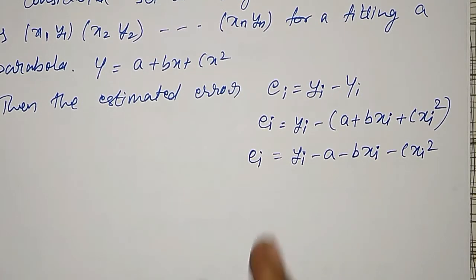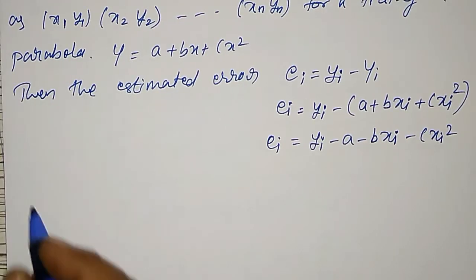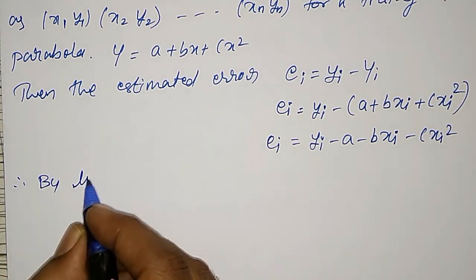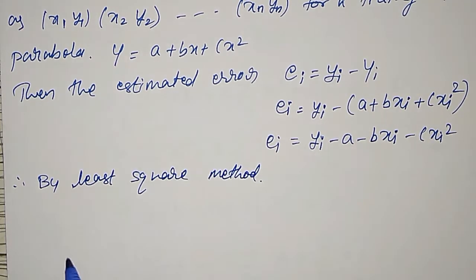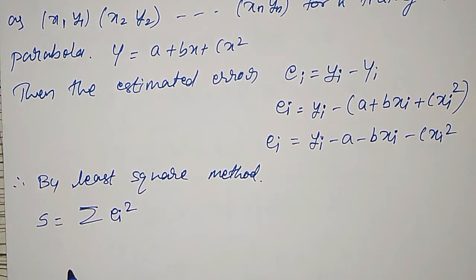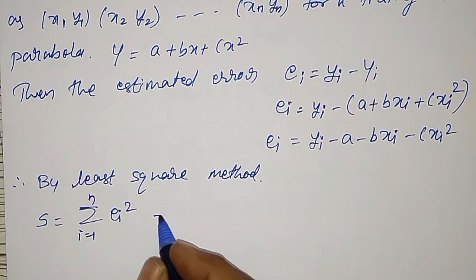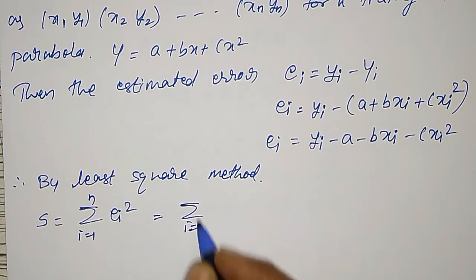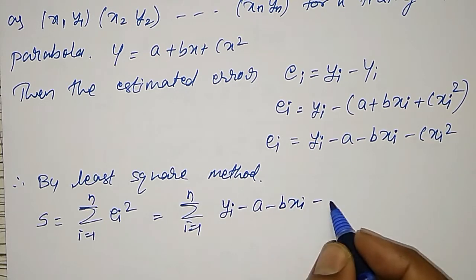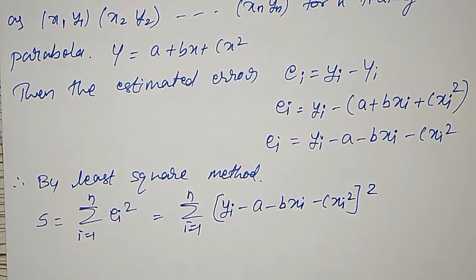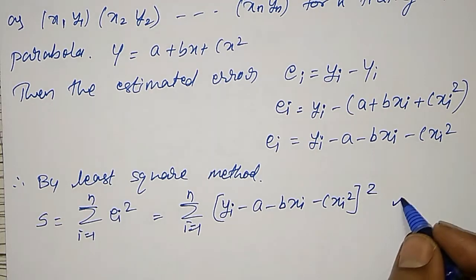In the least square method, the sum of the estimated errors squared must be least. Therefore by the least square method, S is equal to summation from i equal to 1 to n of the quantity yi minus a minus bxi minus cxi square, whole squared, is minimum.